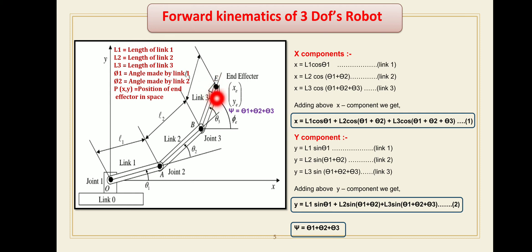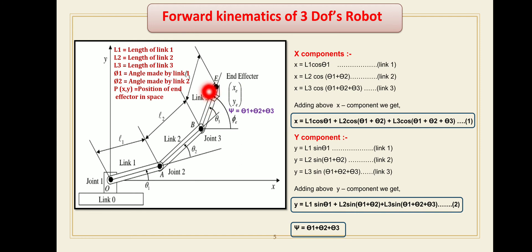The robot end effector acts as the hand of the robot, which is directly connected to the third or last joint. You can easily perform tasks with the help of the end effector. As per the decided task you can replace the end effector — for example, in a welding robot you connect a welding gun, and for spray painting operation, a spray painting gun acts as the end effector.